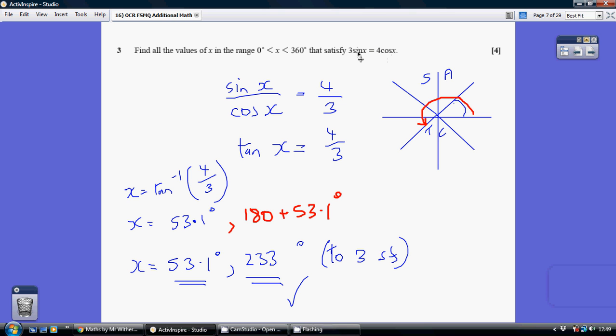So what I'm going to choose to do, I'm going to choose to divide by 3, so that will give me sin x equaling 4 over 3 cos x, but at the same time I'm choosing to divide both sides by cos x, so I've got sin x over cos x on the left, and cos x over cos x would just be 1, so that gives me this here.